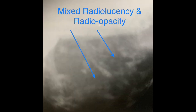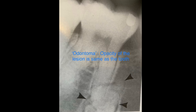Whenever you see a lesion in a radiograph that shows both radiolucency and radio-opacity, it means that either something is dissolving or something is forming. In this case it is a cementifying fibroma — since it involves soft tissue it appears radiolucent, but the term 'cementifying' means something is mineralizing or depositing within the lesion itself, giving it a mixed appearance. Choose the option that goes with the radiograph in that way.